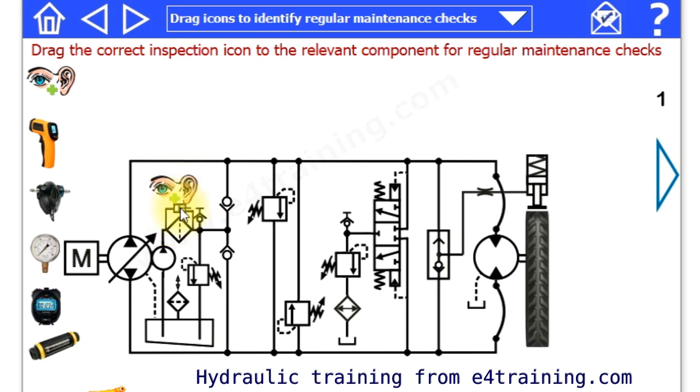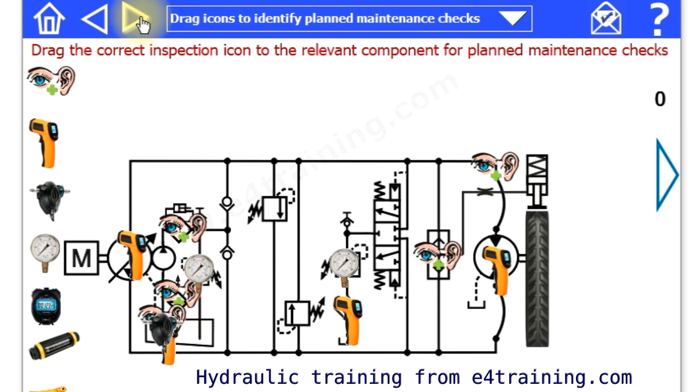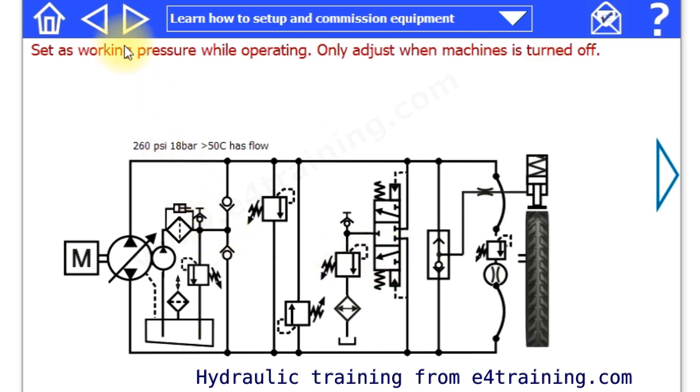Regular maintenance will be just to look at the clogging indicator on the filter. So we have to drag these on to score points. Make sure you understand what's happening. More involved planned maintenance and commissioning instructions. So we go through what you would need to do to set the equipment up.